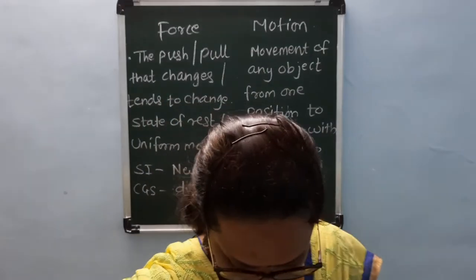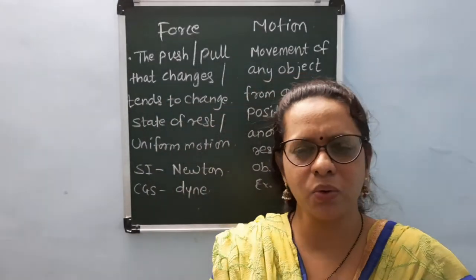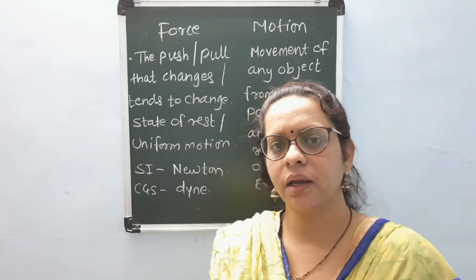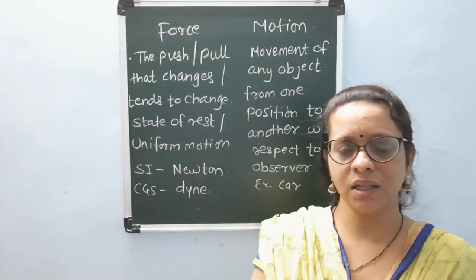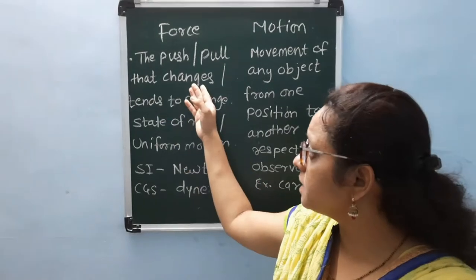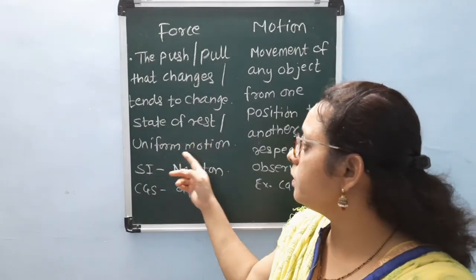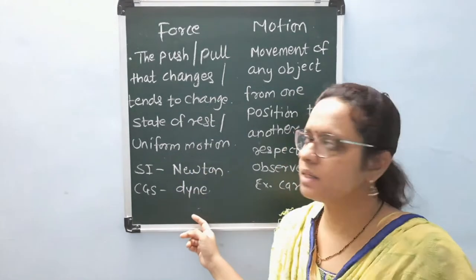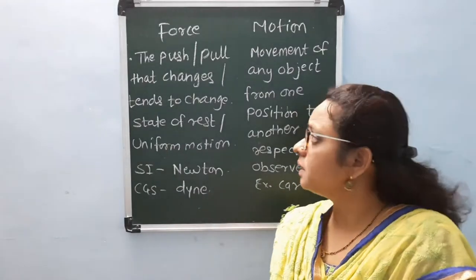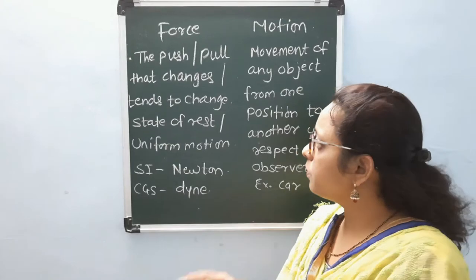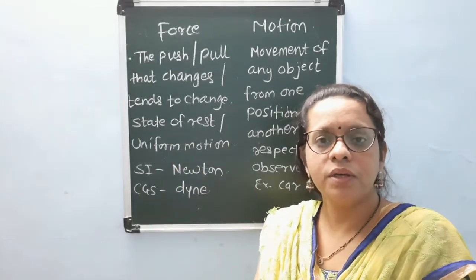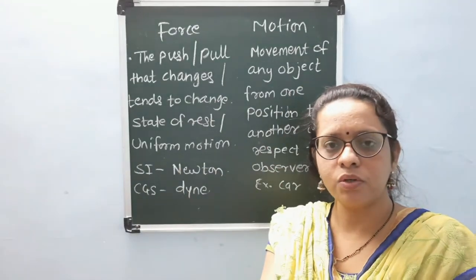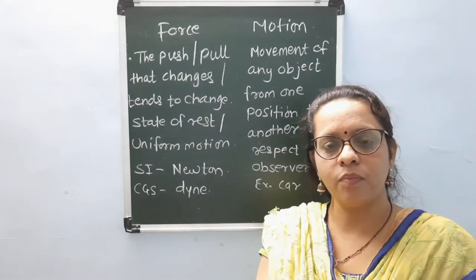In the book, the next part is given as force and motion. You had already studied force and motion in 9th standard and 8th standard. Here, once again, we will take a revision of that. What is force? The push or pull that changes or tends to change the state of rest or uniform motion. Its SI unit is Newton and its CGS unit is dyne. Force is a push or pull that changes or tends to change the body which is at rest into motion, or the body in uniform motion can be stopped.